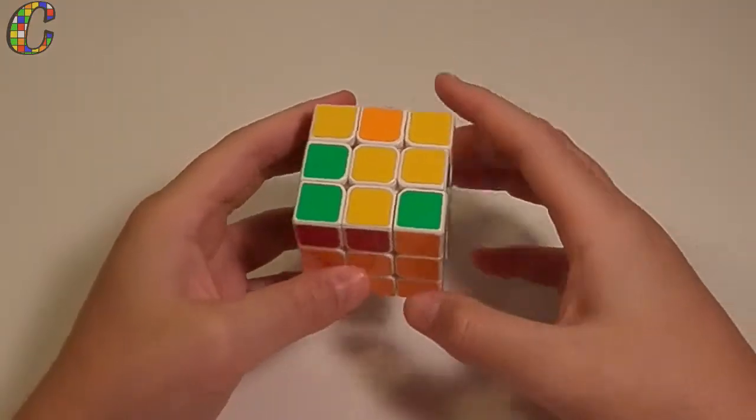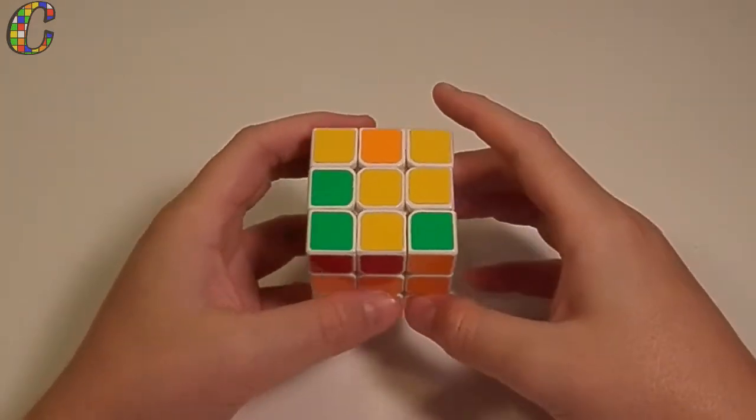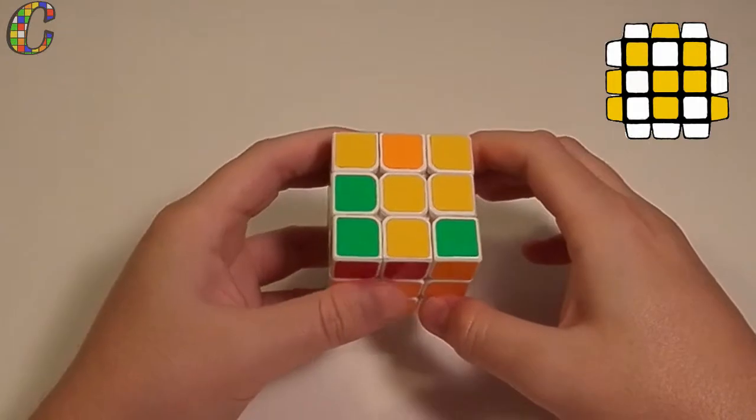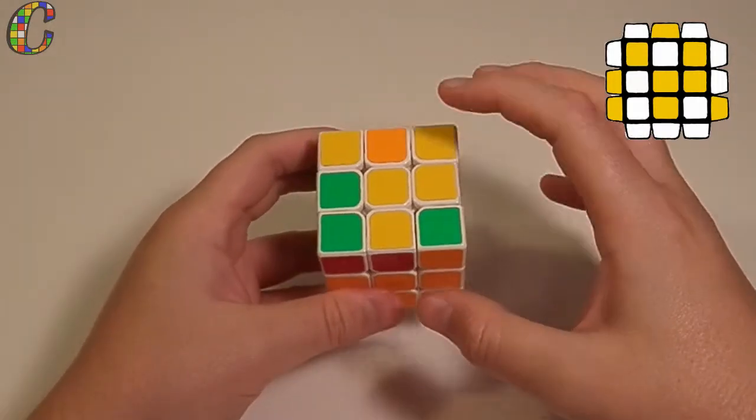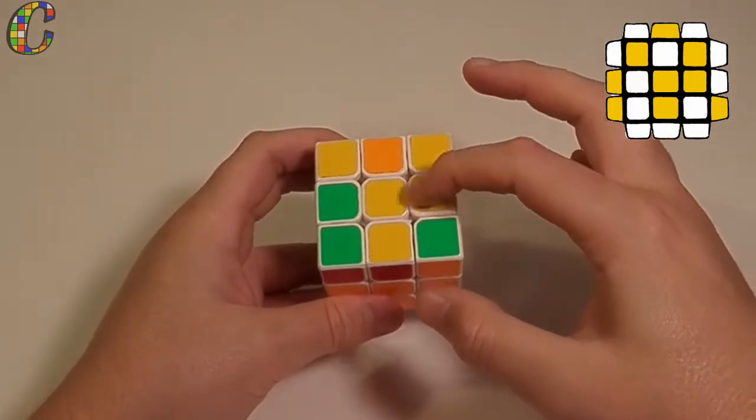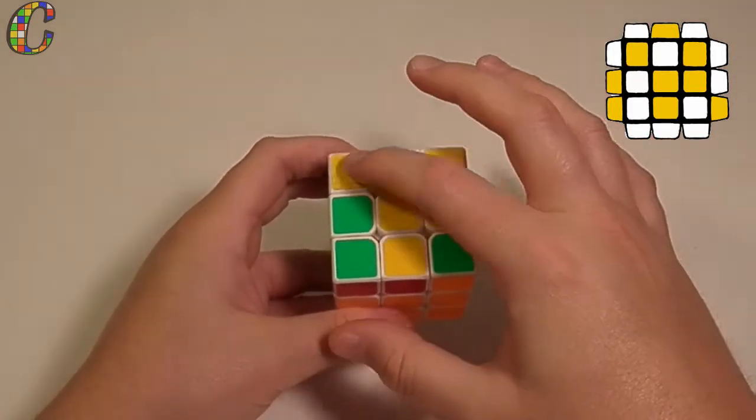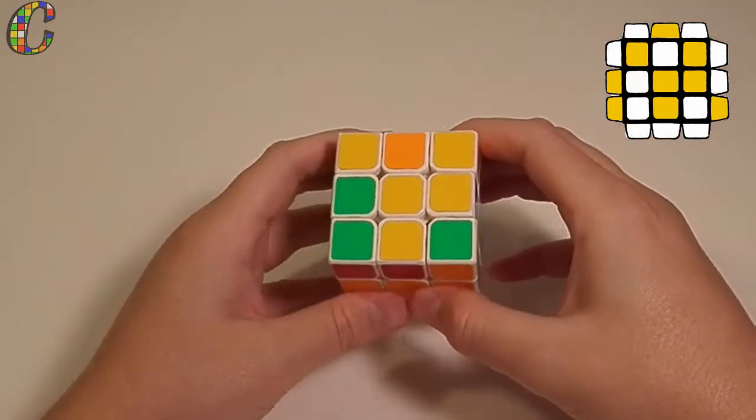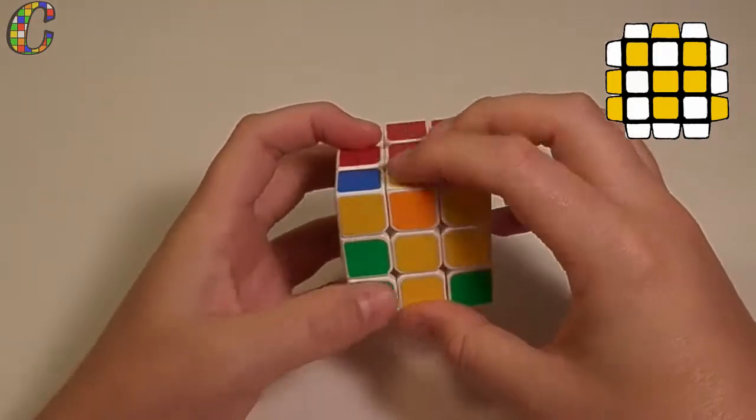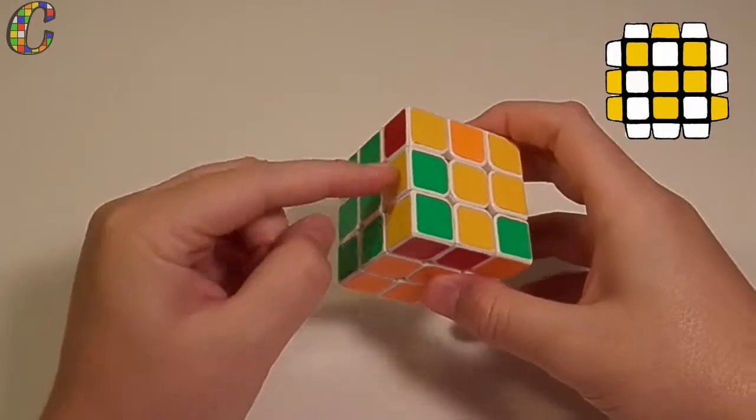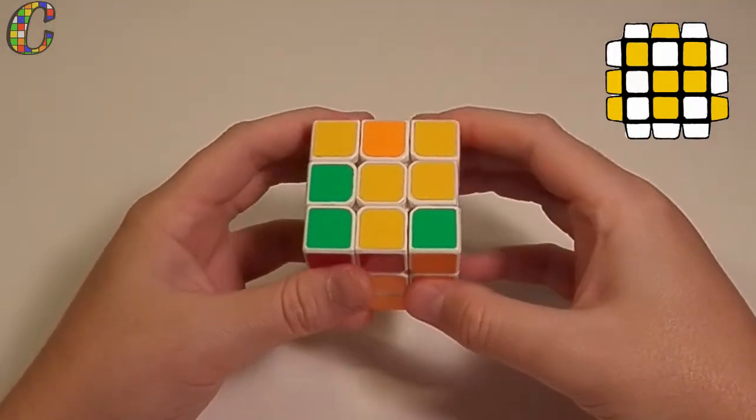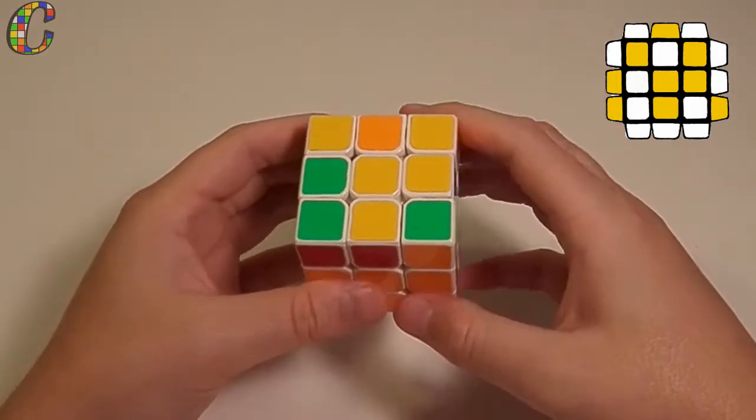The second case we're going to cover today is OLL number 30. As you can see, it's the same general shape as the first case we covered, OLL number 29, but it's oriented a little differently on top. You have this zigzag shape on the top right. The top left corner is oriented, the bottom right corner is facing to the right, this edge is facing up, and your 2x1 block will be on the left. Now, once you have the cube oriented like this, do the following algorithm.